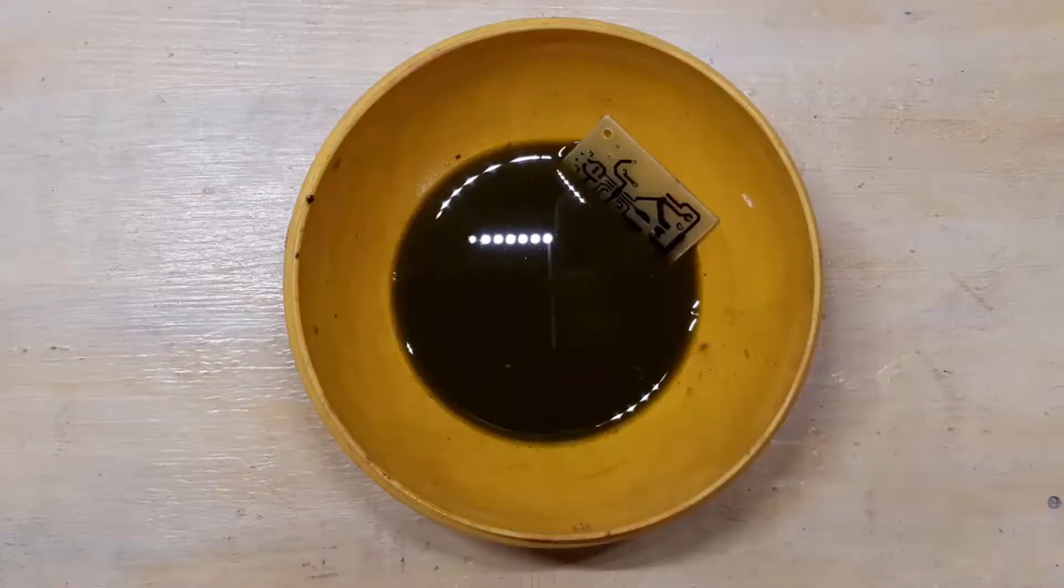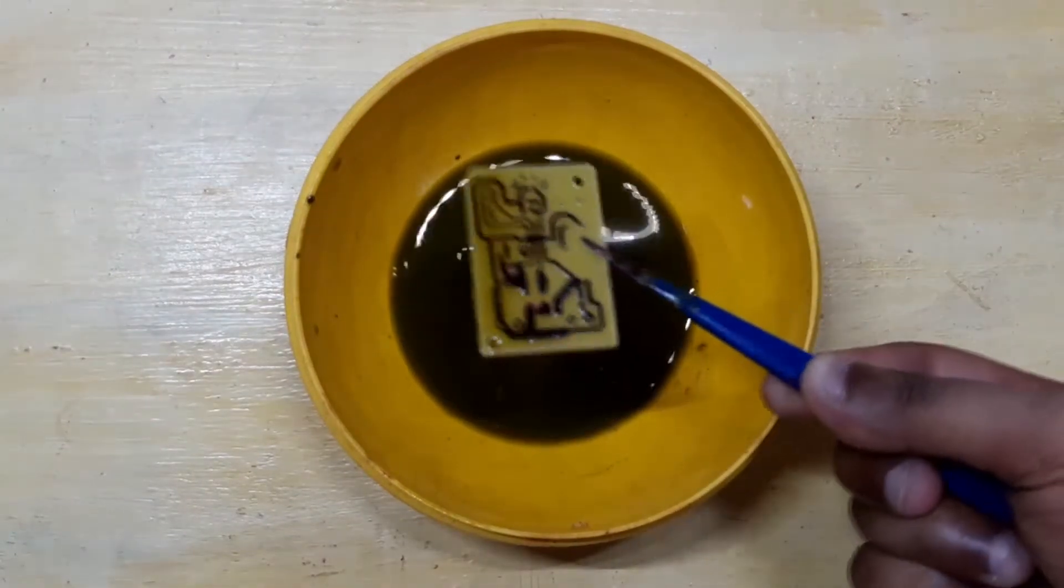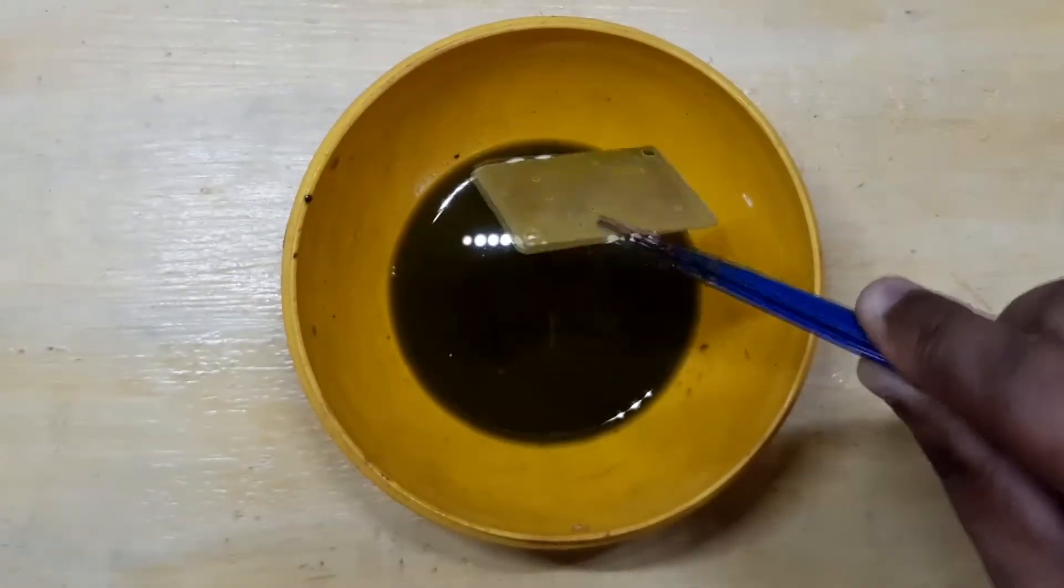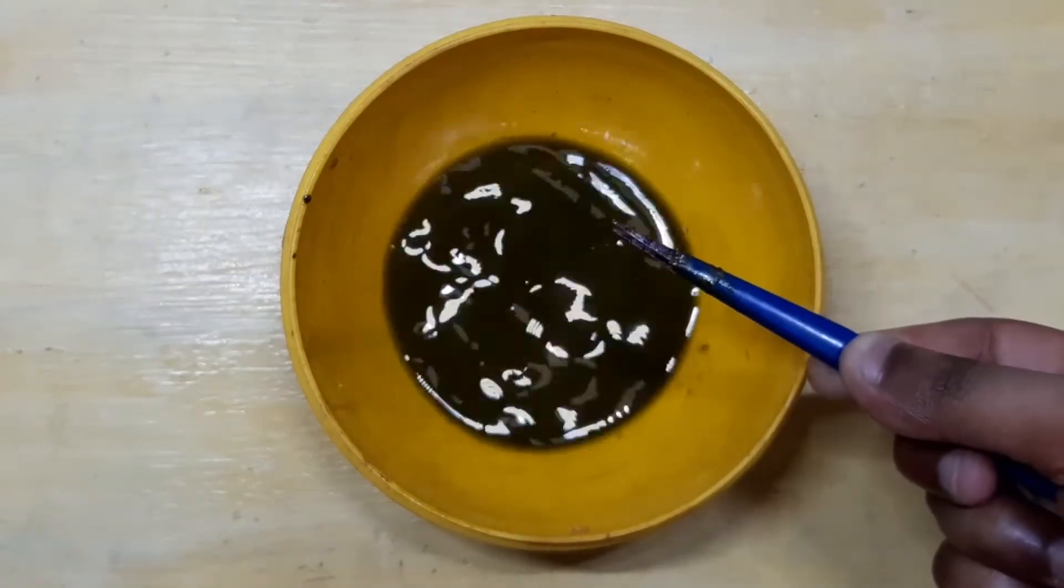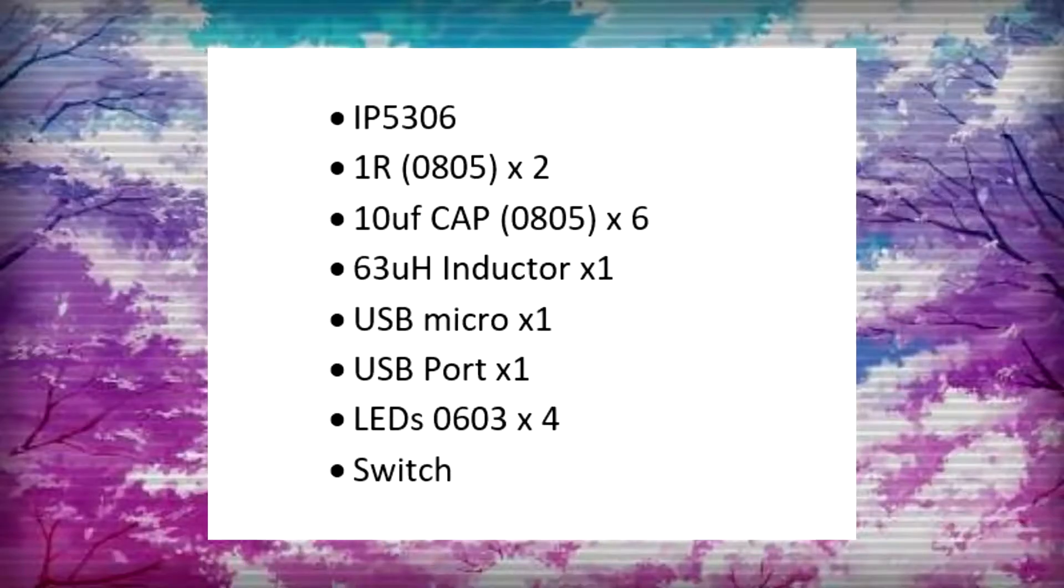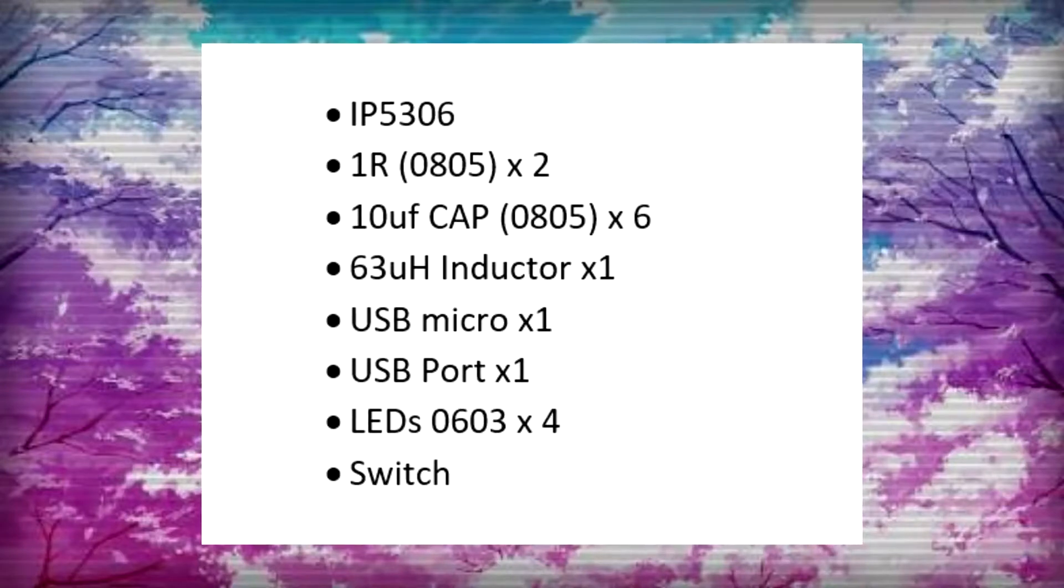The result will be something like this, an entirely homemade PCB which we can use in this project. Now let's do the soldering process. We just need to gather all the components mentioned below and solder them on the PCB one by one.